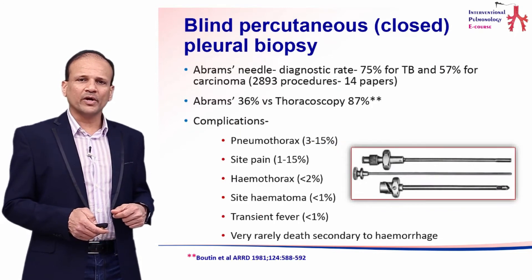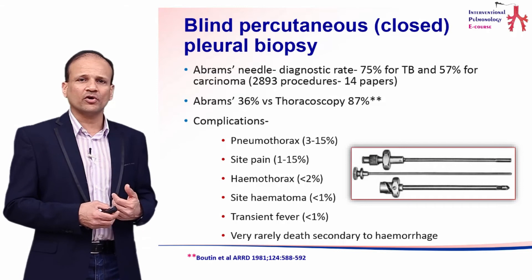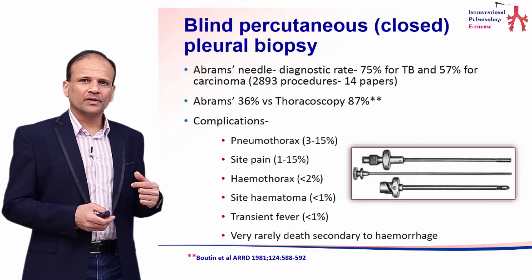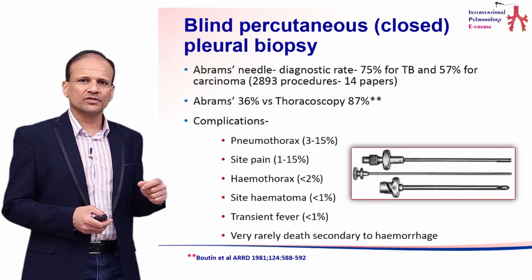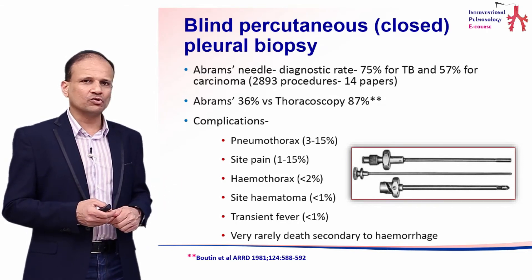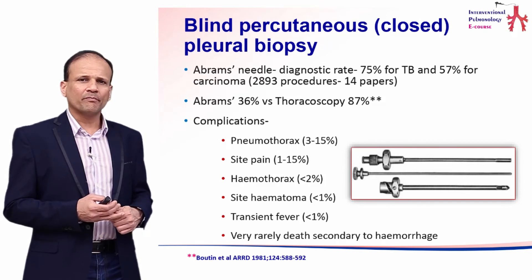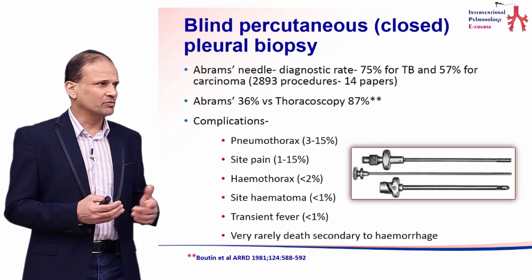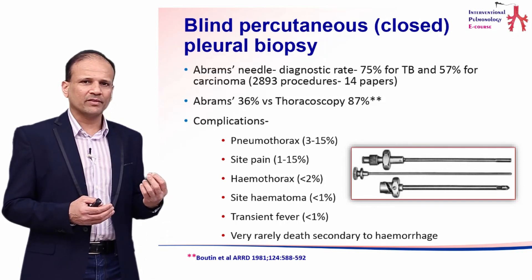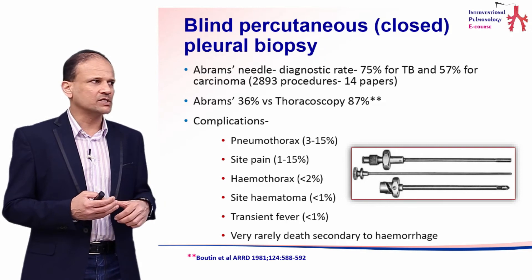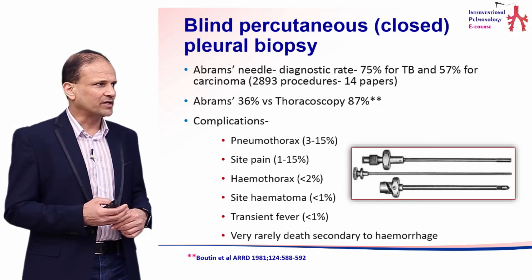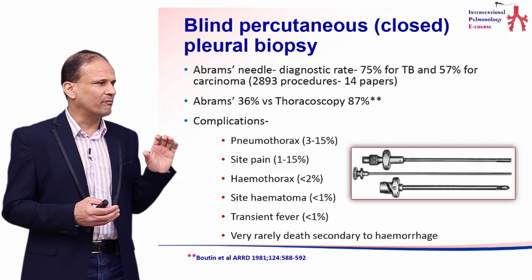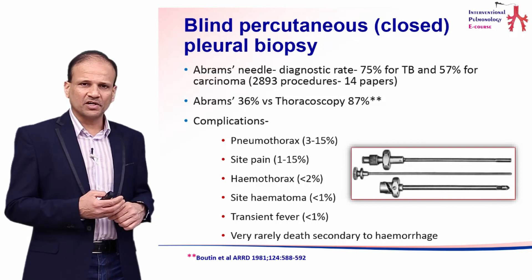Pleural fluid cytology is usually followed by biopsy. The commonest technique utilized is blind pleural biopsy using an Abrams needle. This is pretty good for diffuse pleural disease such as tuberculosis, but not good enough when there are patchy abnormalities in malignancy, especially in mesothelioma, where the diagnostic pick-up rate of blind biopsy is less than 30 percent.